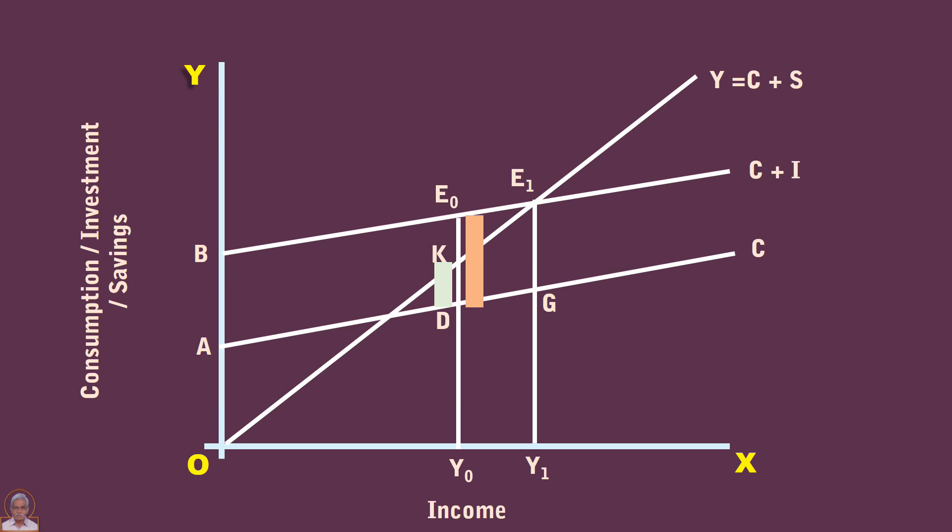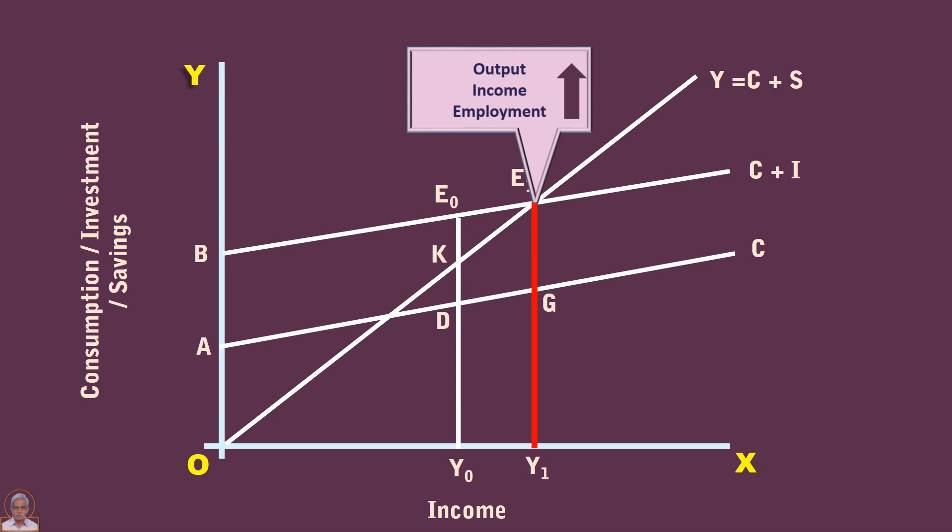As a result of this, output, income, and employment will increase in the economy. This process will continue until the equilibrium level of income Y1 is restored again.